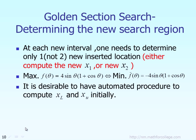Golden section: suppose we want to find the maximum of the function f of theta. One important thing to know — if you want to maximize a function f, that is the same thing as minimizing a new function equal to the negative of the previous function. So maximizing f is equivalent to minimizing negative f.